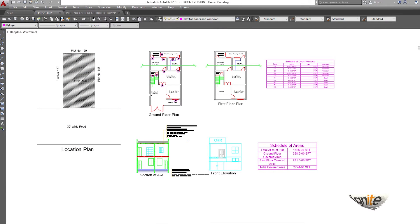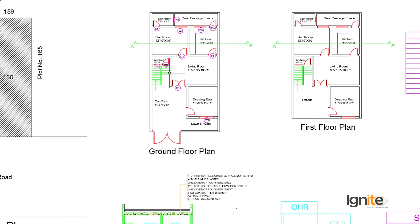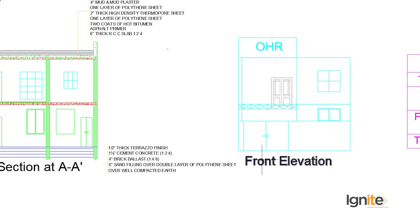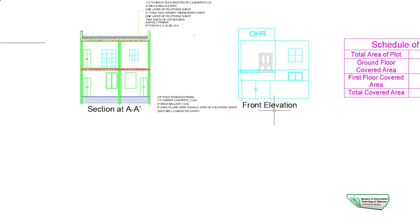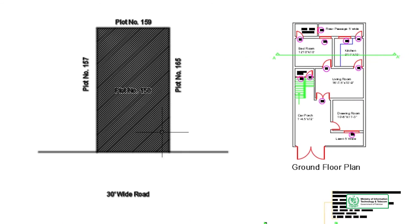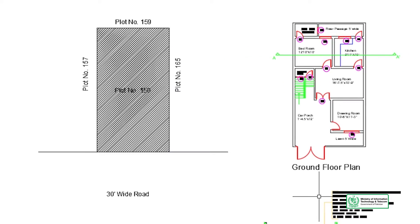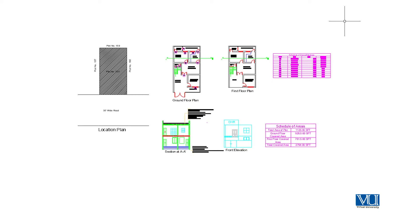We have our drawings here. This is our ground floor, this is our first floor, this is our elevation, and this is our section. We have the schedule of doors and windows, our location plan, and other layout views. We also have the foundation details from previous topics.